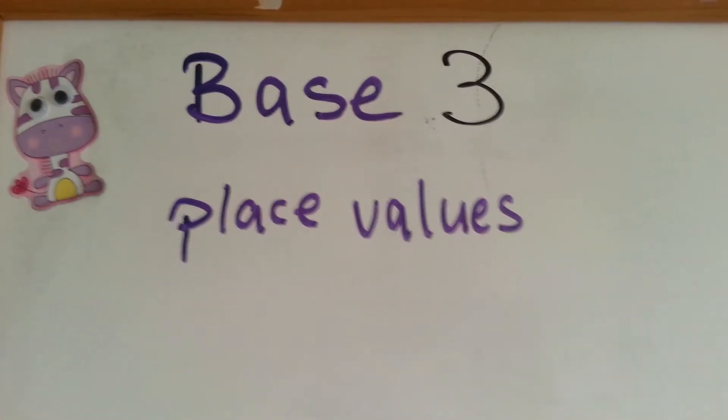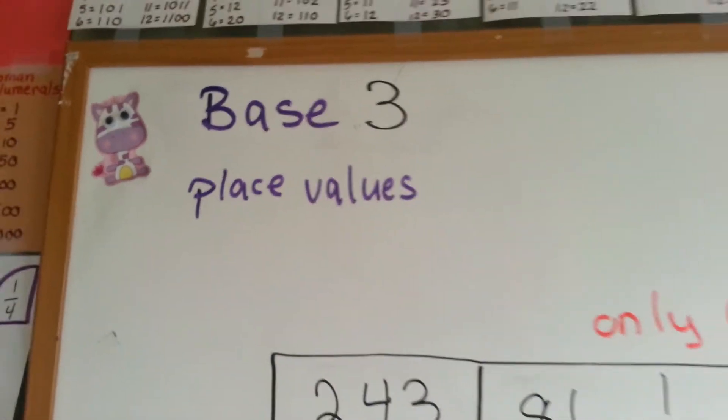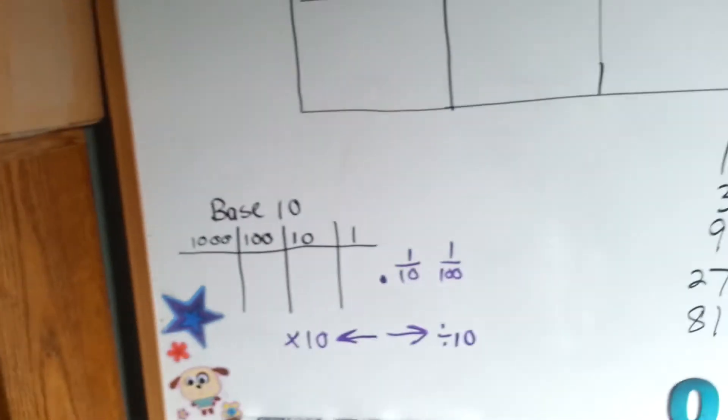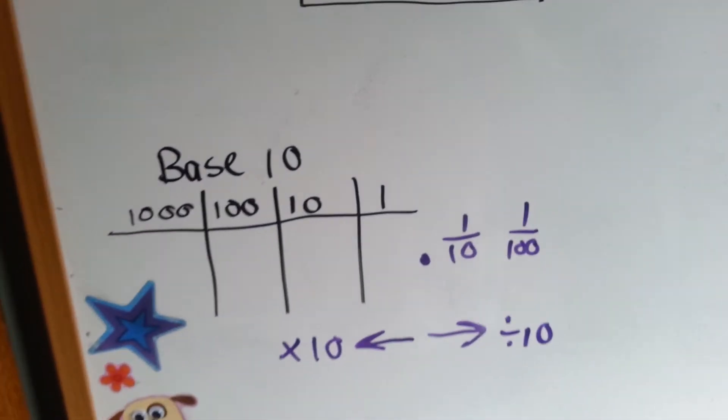Base 3 place values. We've been slowly counting down from base 10, and now we're at base 3. I'm going to show you what base 3 is, but first let's go over this really quick.